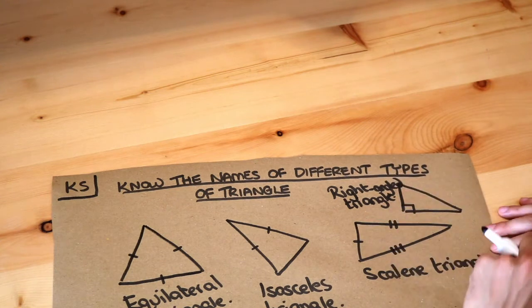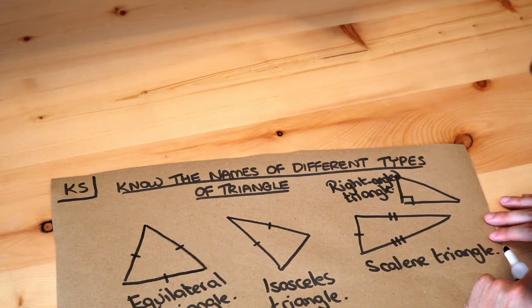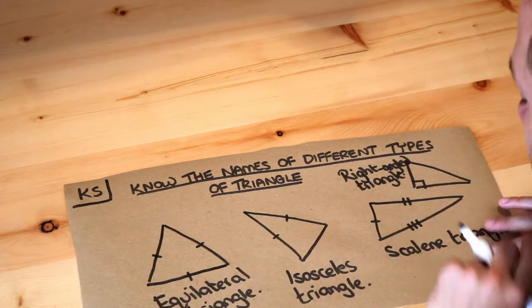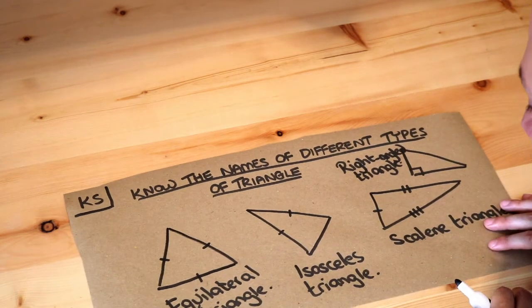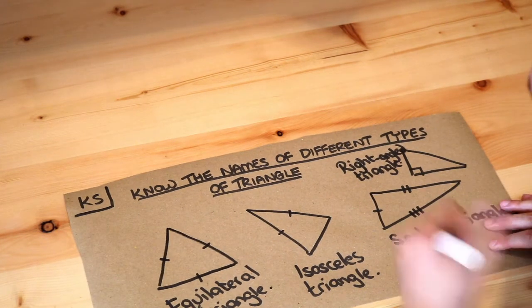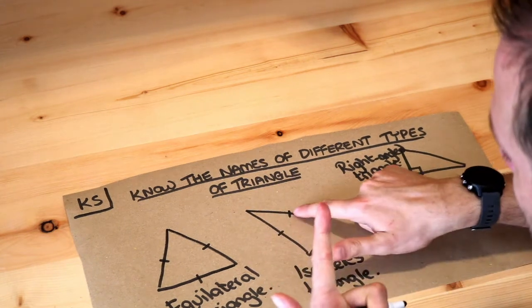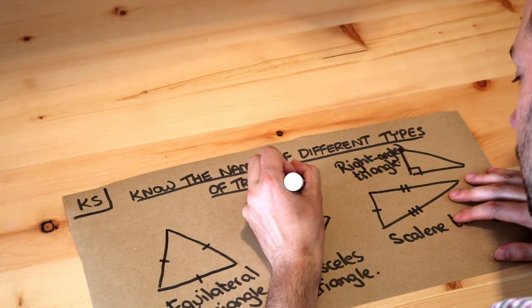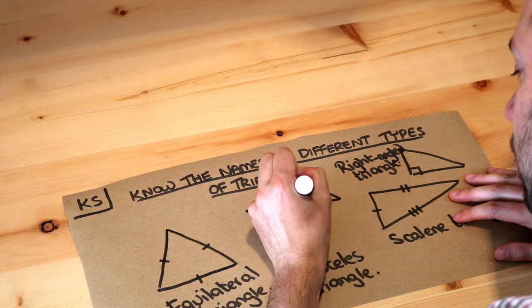Now in this particular case, all three lengths are different, so that would be a scalene right-angle triangle. But it's possible to have an isosceles right-angle triangle. So an isosceles right-angle triangle has a right angle and two of the lengths will be the same...